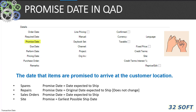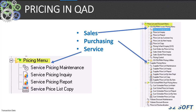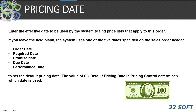Performance dates are optionally entered when a part is available to ship. Many factors can affect available-to-ship, so this will likely require constant updates to maintain validity. There are three different areas of pricing functionality in QAD: sales, purchasing, and service. The pricing date is the effective date used by the system to find a price list that applies to an order. If you leave the field blank, the system can use one of five dates on the sales order header — order, required, promise, due, or performance date — to set the default pricing.